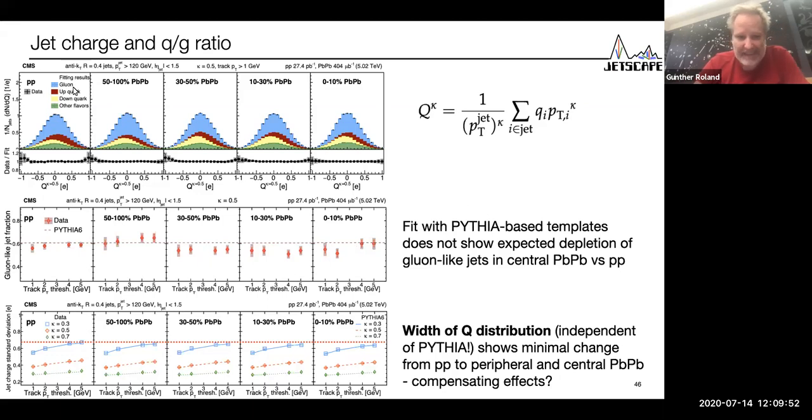Now, caveat here is that the templates used to distinguish between different flavors come from Pythia. So this has to be treated with some skepticism. However, the distributions just look very similar. So the question is, is this an indication that quarks and gluons have similar probability to survive? Or is it just a balance of counteracting effects? It needs to be followed up with data-based templates. It would be nice to study this in photon or Z jet events.